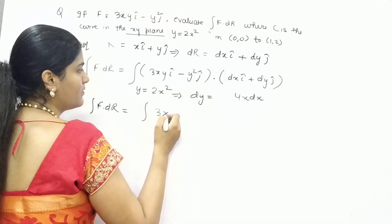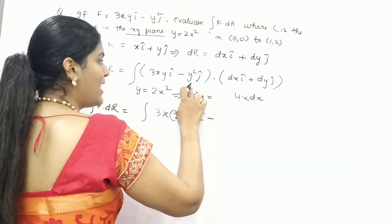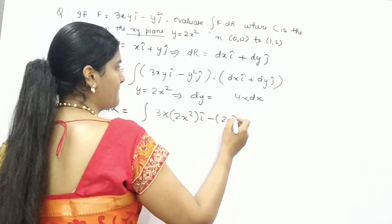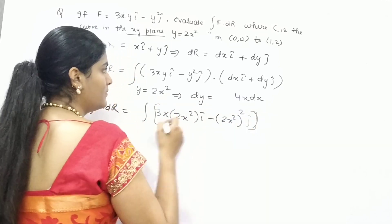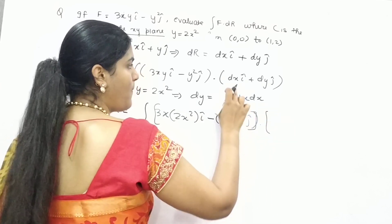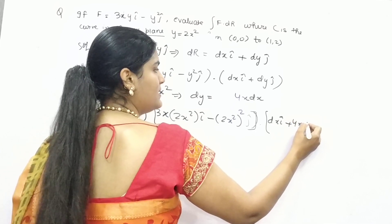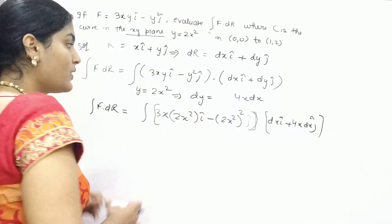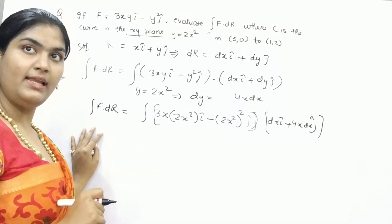3xy is 2x square minus y square, y is 2x square dot dxi and dy is 4x dx j. You can see that everything is in the form of x now. So you can easily integrate.